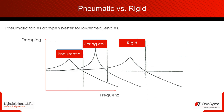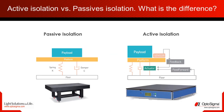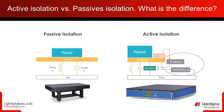In the graph we see three curves. All optical tables isolate well at high frequencies, but a pneumatic table generally has better properties at lower frequencies. Active vibration isolation systems include a feedback system that checks the position of the breadboard with integrated digital sensors.